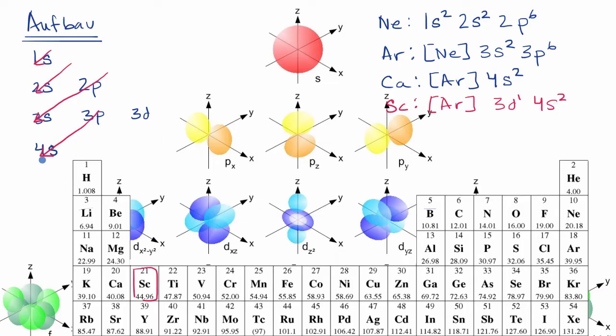Now, the Aufbau principle makes you think that you're filling 4s first, and then you are starting to fill 3d, if you're actually building up a scandium atom. And that's actually taught in most chemistry books and in most classes. But actually, if people start with a scandium nucleus that has 18 electrons, so that would have a positive charge, when they add that first electron, it actually does not go to 4s. It goes to 3d. So this electron actually gets added first, if you're actually thinking about building. But I don't want to confuse you too much.